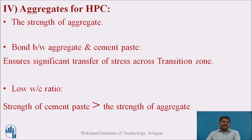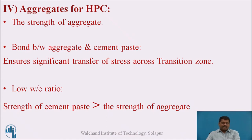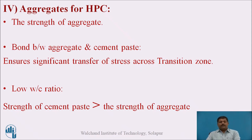The fourth important feature is aggregates for high performance concrete. In normal concrete, the strength of the aggregate plays a role, but in HPC a significant portion of the strength can be carried by the aggregate volume. The stresses acting on concrete sections must transfer from the cement paste to the aggregate, and this transfer occurs only through the bond between aggregate and cement paste. That bond must be proper and strong to ensure significant stress transfer across the transition zone.